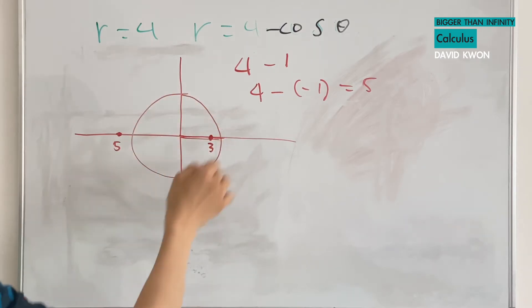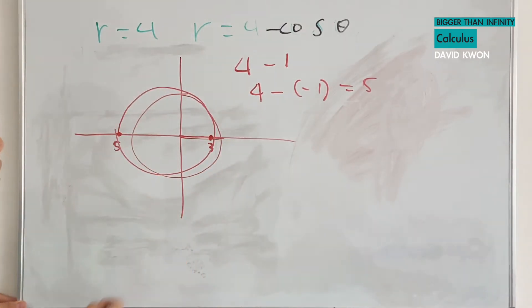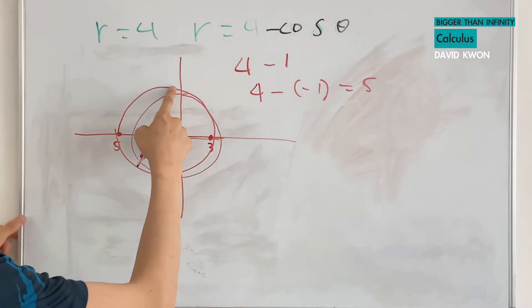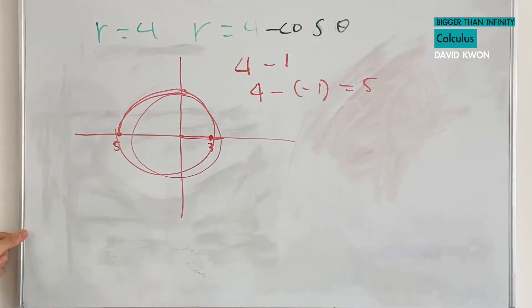And we have a circle. It's just a shifted version of the circle, but somehow it looks bigger. I do not know why, but yeah.